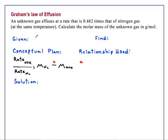Graham's law of effusion. An unknown gas effuses at a rate that is 0.462 times that of nitrogen gas at the same temperature. Calculate the molar mass of the unknown gas in grams per mole.